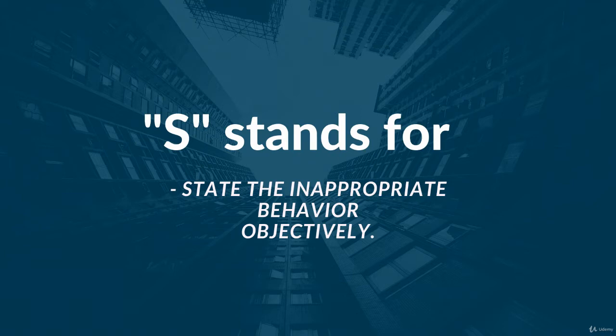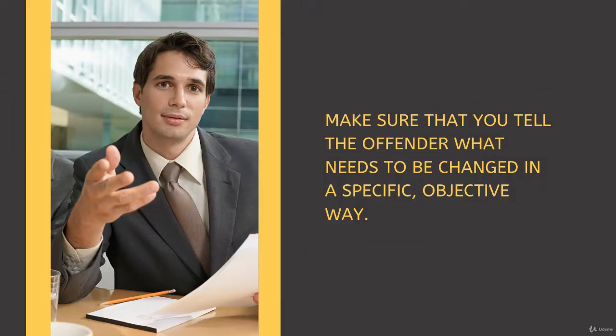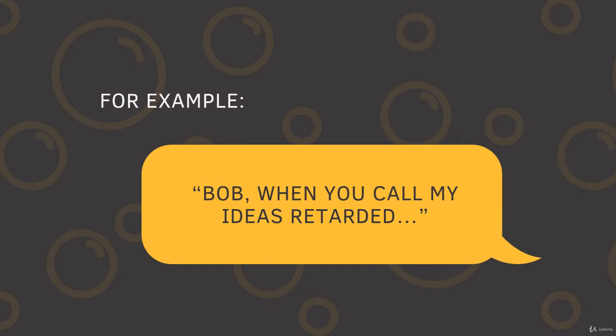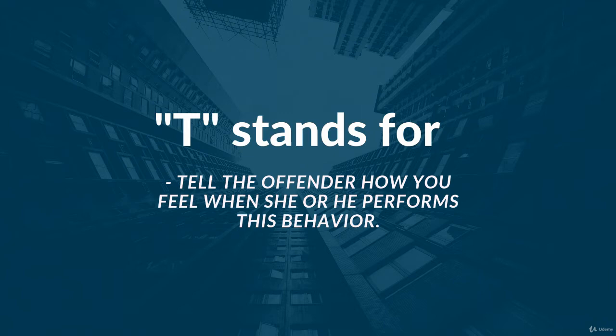S stands for State the Inappropriate Behavior Objectively. Here you should tell the offender what needs to be changed in a specific, objective way. If you show your feelings, the offender will often respond with anger and denial, which will get both of you nowhere. For example: 'Bob, when you call my ideas retarded…'